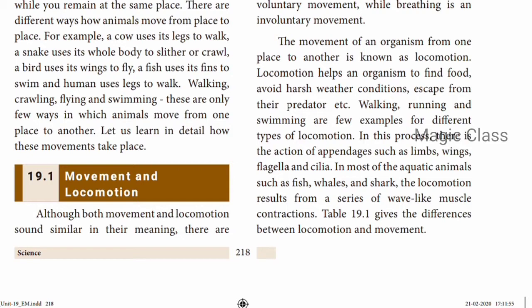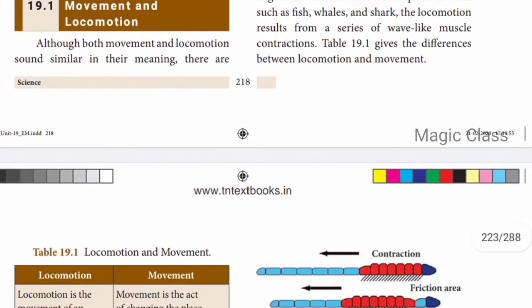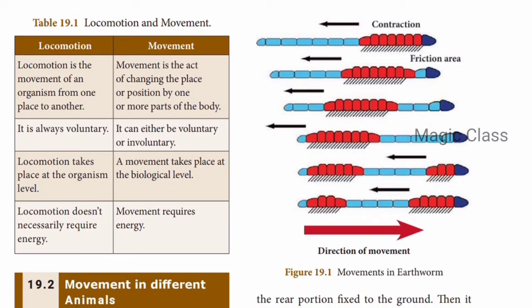In locomotion, there is the action of appendages such as limbs, wings, flagella, and cilia — appendages are additional parts attached to the body. In most aquatic animals such as fish, whales, and sharks, locomotion results in a series of wave-like muscle contractions that move the animal from one place to another. Table 19.1 gives the difference between locomotion and movement.